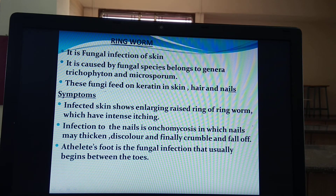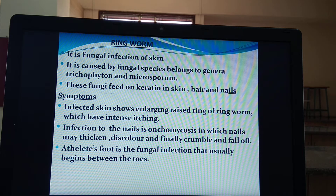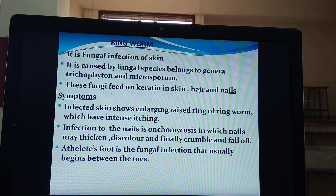Why is ringworm seen on skin only? Because this fungi feed on keratin in skin, hair and nails. Keratin is a substance which is found generally on the surface of the skin. So this fungus feeds on keratin in the skin, in the scalp and hair, and in the nails. So ringworm is generally found in skin, in the scalp of hair, and nails.